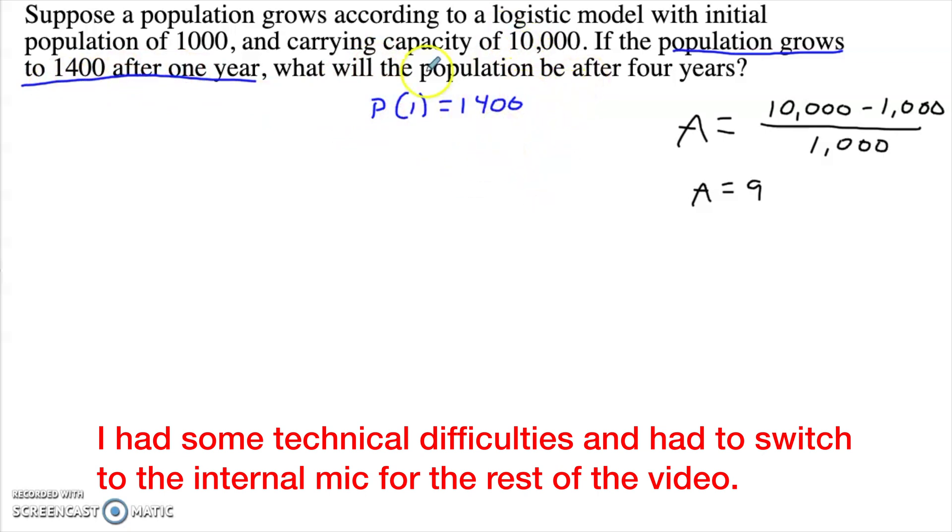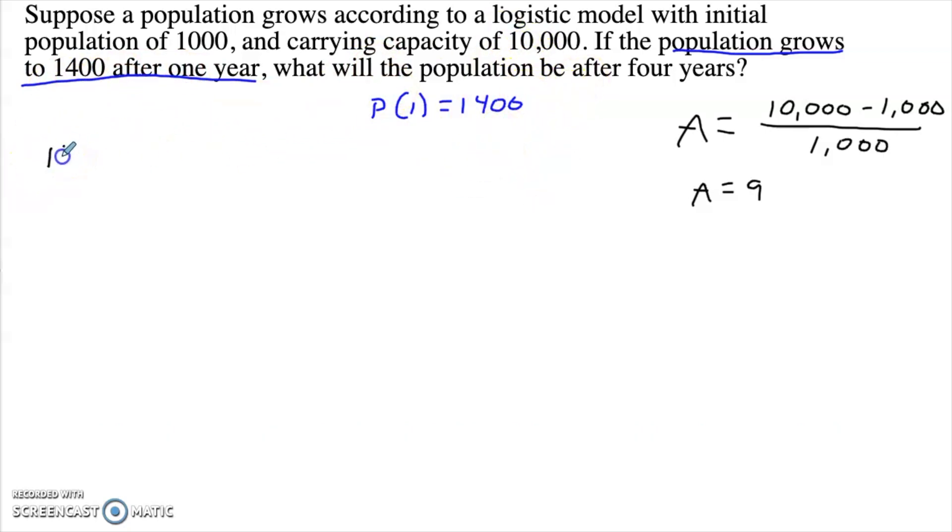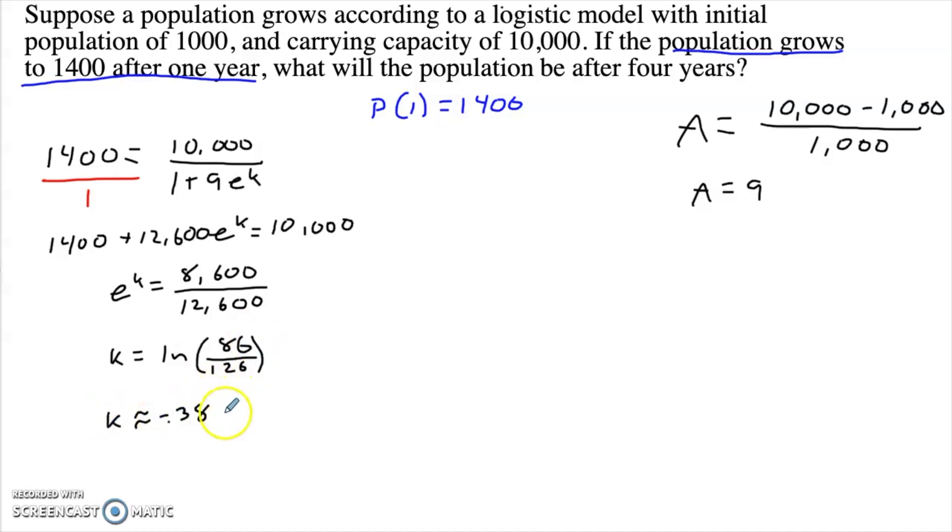We're going to plug into the equation to solve for k. So what we know is that we can say 1,400 is equal to 10,000 over 1 plus 9e^k. So we get 1,400 plus 12,600 e^k equals 10,000. Then e^k is equal to 8,600 over 12,600, which means k is the natural log of 86 over 126. And then we get a k approximately negative 0.3819346107. Now remember, these k's tend to be pretty sensitive. So we want to use all of those digits.